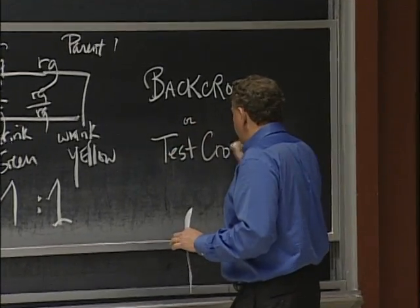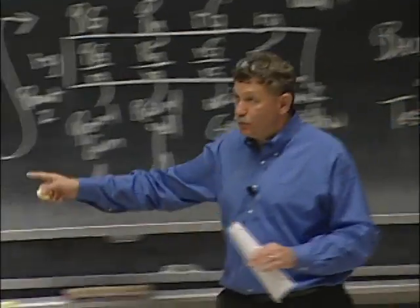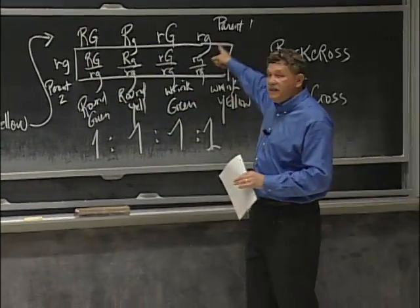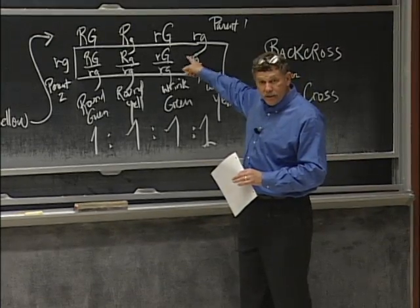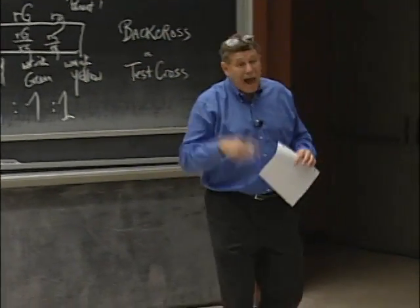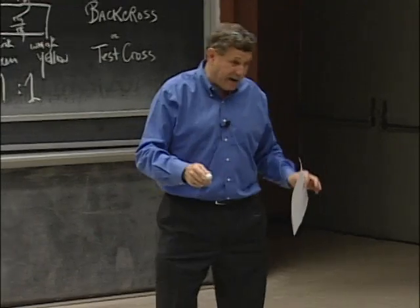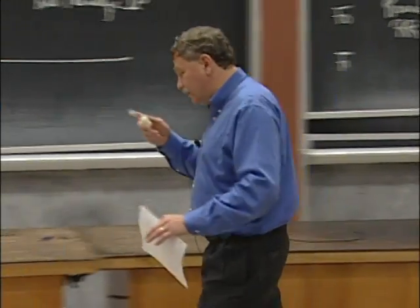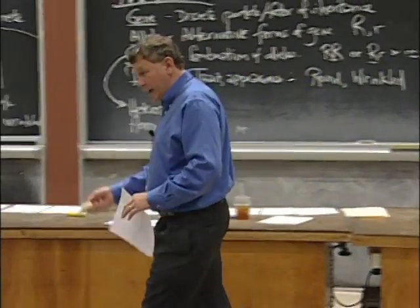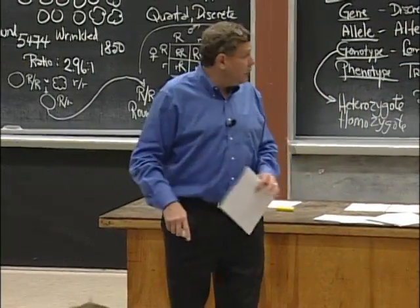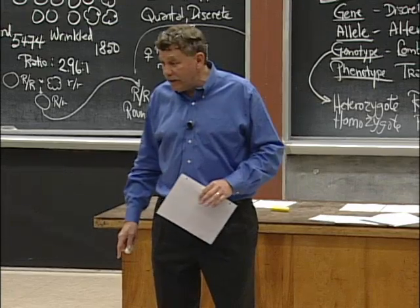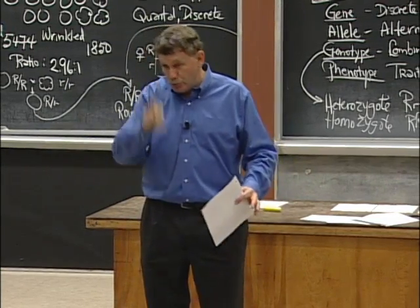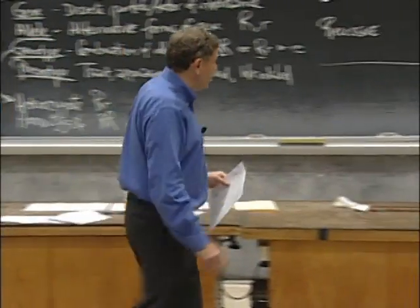If I hadn't done a back cross or test cross, I would instead have had to make a square with 16 boxes. I would have had to add up the 16 boxes to figure out how many were round and green — 9 out of 16; round and yellow — 3 out of 16; wrinkled and green — 3 out of 16; and wrinkled and yellow — 1 out of 16. But for the purposes of the whiteboard, I did the test cross because it's simpler.